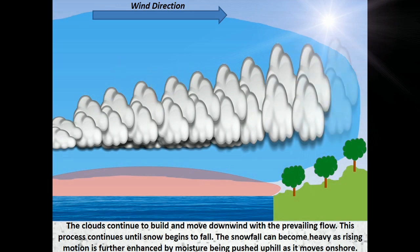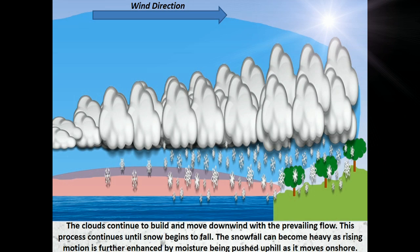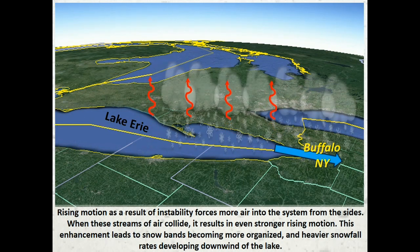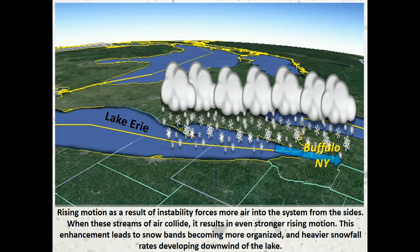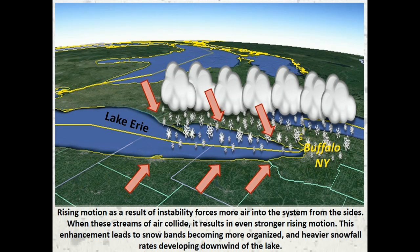The snowfall can become heavy as rising motion is further enhanced by moisture being pushed uphill as it moves ashore. Rising motion, as a result of instability, forces more air into the system from the sides. When these streams of air collide, it results in even stronger rising motion. This enhancement leads to snow bands becoming even more organized, and heavier snowfall rates developing downwind of the lake.